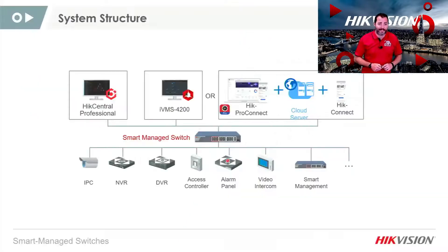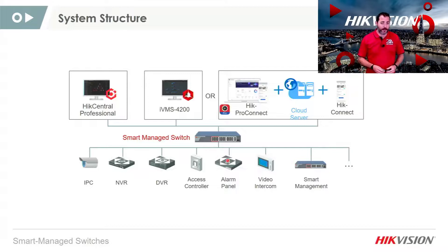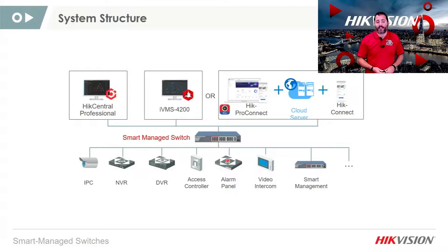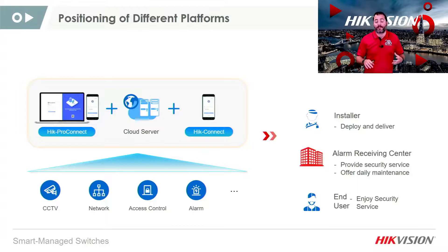Next let's look at some of the functionality — system topology. With software tools like IVMS, Hike Central and HikePro Connect it's possible to view the network topology of your IP infrastructure. Hike Central can support a maximum of 128 switches, IVMS supports up to 16 devices in topology, and HikePro Connect can show up to 30 switches per site. Using HikePro Connect, the installer can deliver the solution, and when the system is monitored, any required or scheduled maintenance can be delivered remotely, offering peace of mind that the system is being monitored proactively.